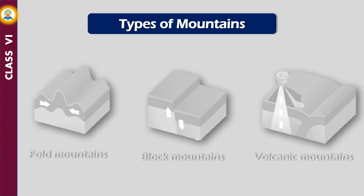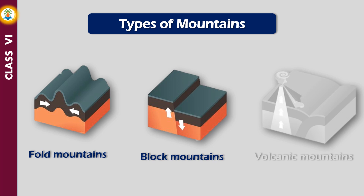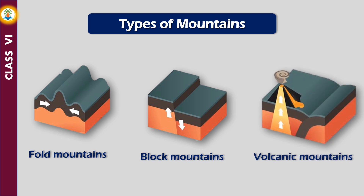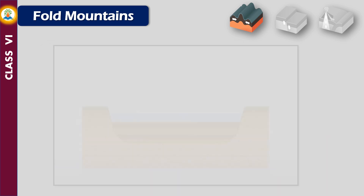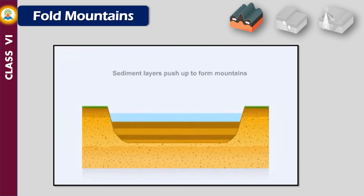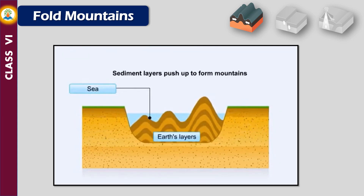Based on their origin, mountains can be classified into three types. Fold mountains are the most common type — they are formed from the folding of the Earth's crust. Huge amounts of sediments deposited on the sea bed form horizontal layers; when compressed from both sides, they are squeezed and folded, then gradually uplifted to form fold mountains.